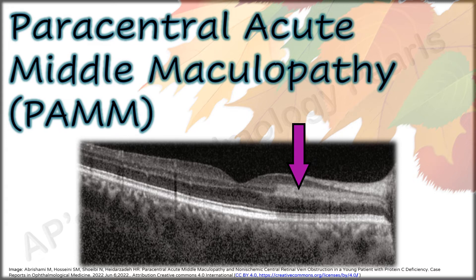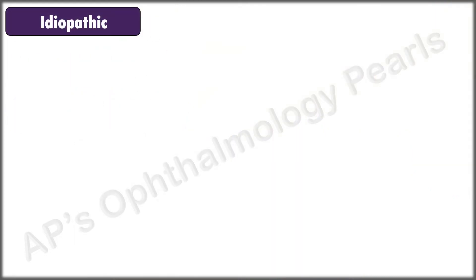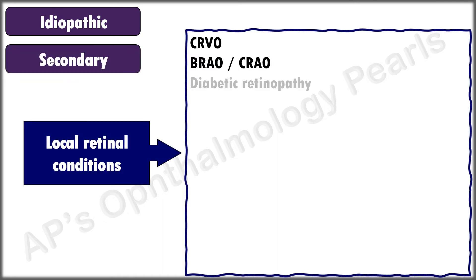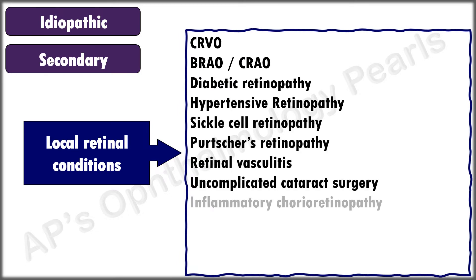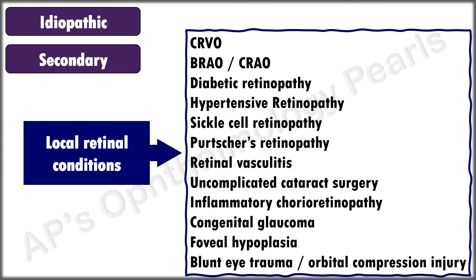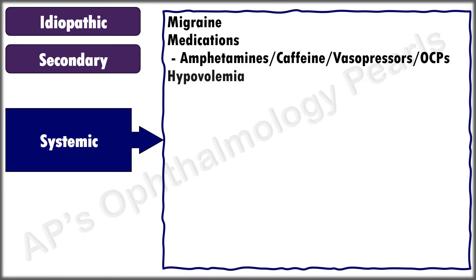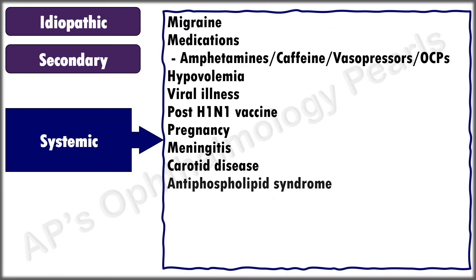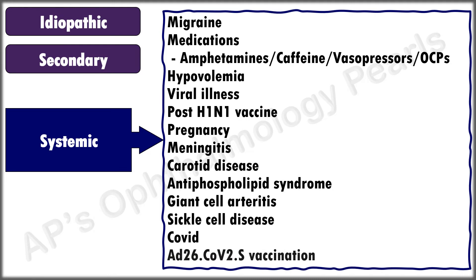PAM is an OCT manifestation of retinal capillary ischemia, first reported in 2013. It was initially described by Saraf et al. as a variant of acute macular neuroretinopathy, but PAM has now been found to be a distinct entity which may occur either idiopathically — in which case it can occur even in younger individuals — or secondary to local retinal conditions, when it is more likely to occur in the 50s and 60s. It has been reported after a number of systemic conditions as well. PAM is now considered a clinical finding rather than a disease.